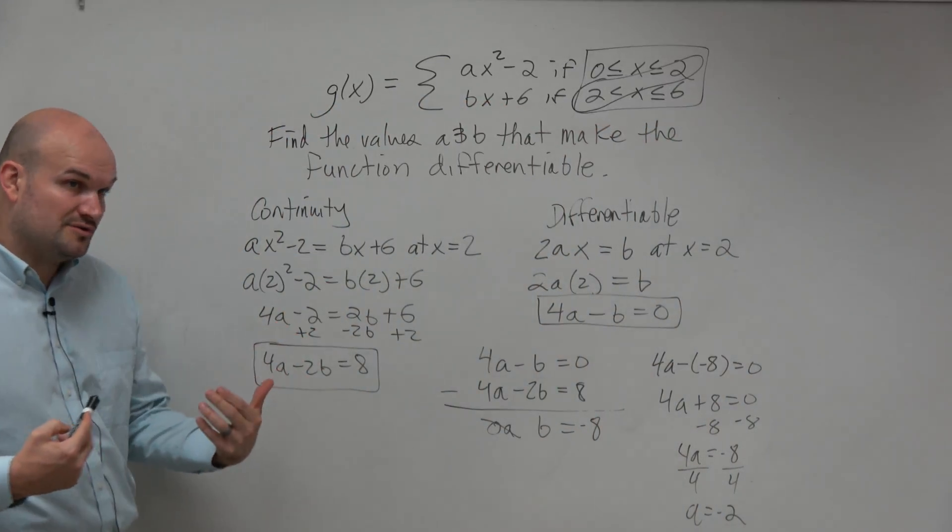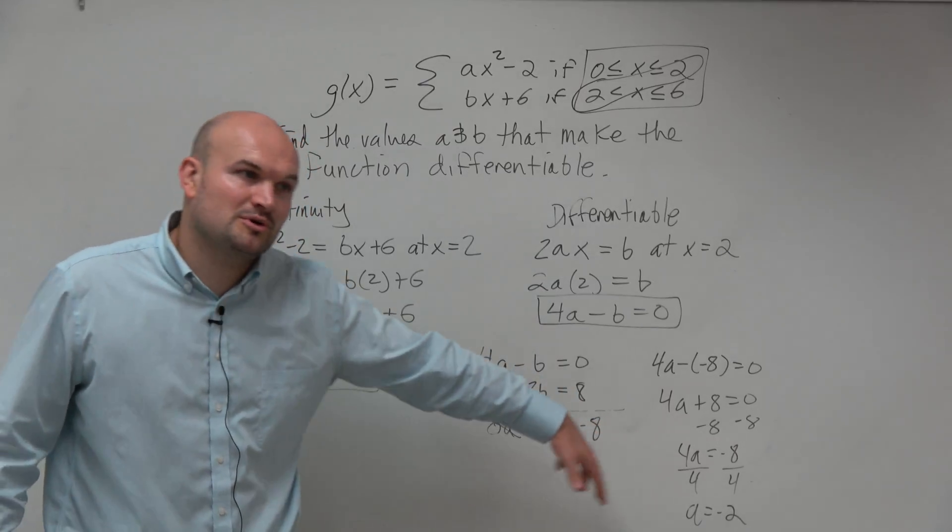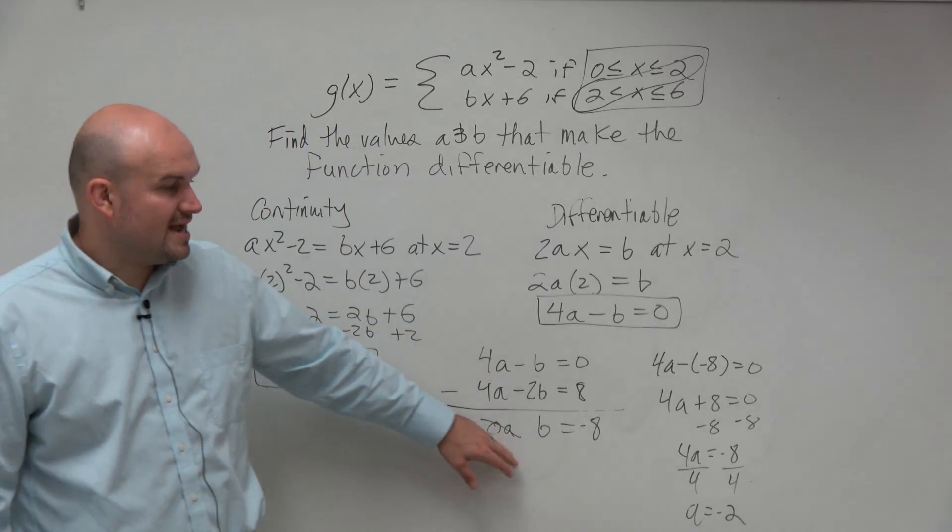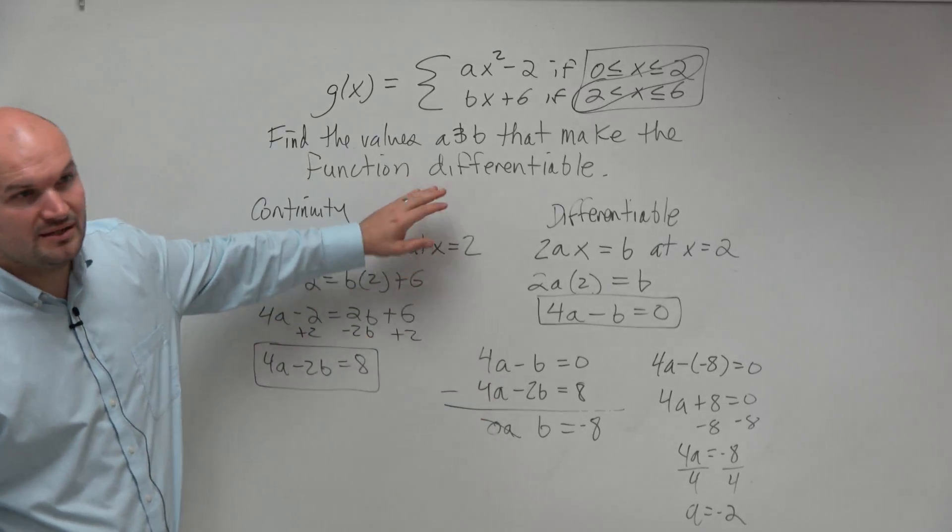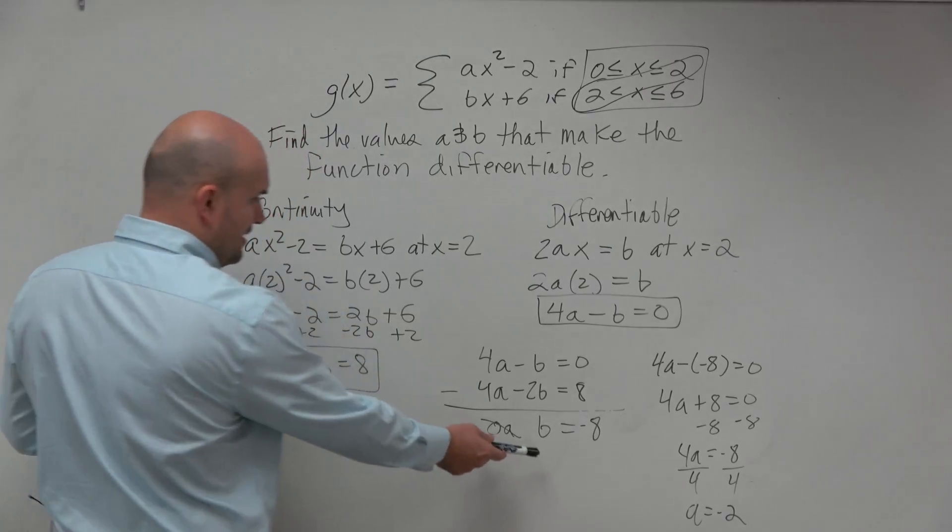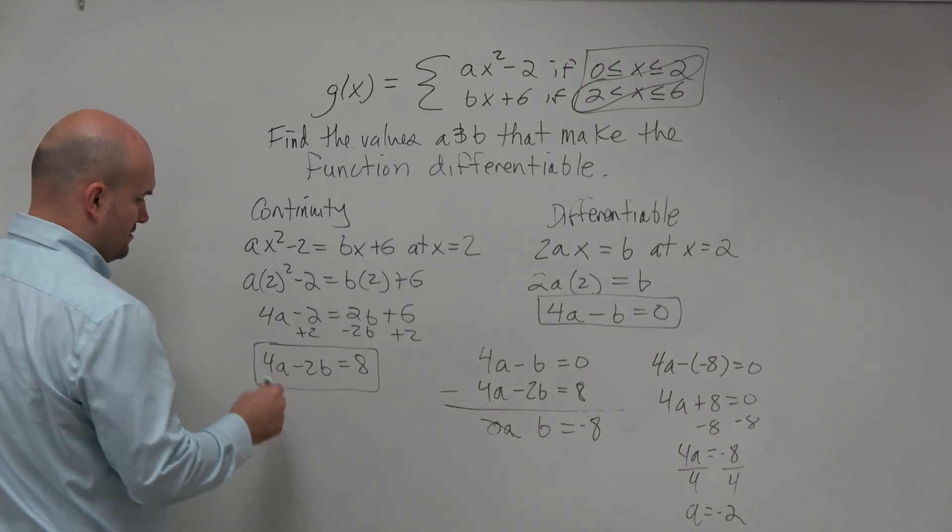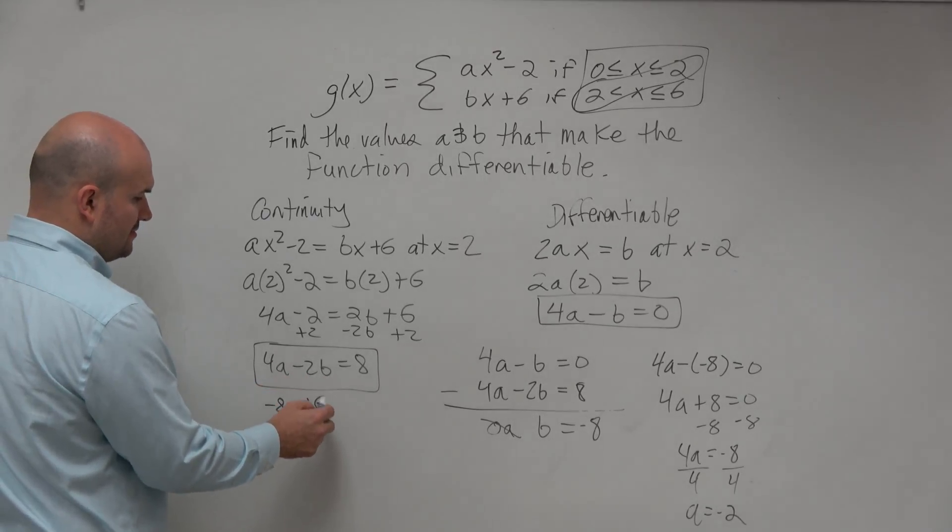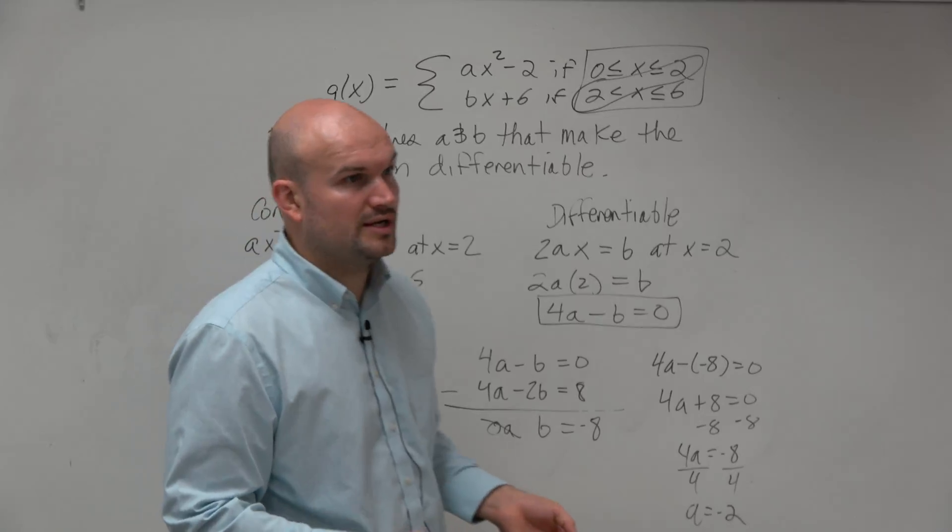So therefore, the two values, which I would write down on a normal test where I was showing my work, I would write down negative 2 and negative 8 are the two values for a and b that make the function both continuous and differentiable. And actually, let's just go back and check. Let's plug in a into this and make sure we have this. So therefore, 4 times 2 is negative 8. Negative 2 times b is going to be a positive 16. Is negative 8 plus 16 equal to 8? Right? So those values work for our continuity. Correct?